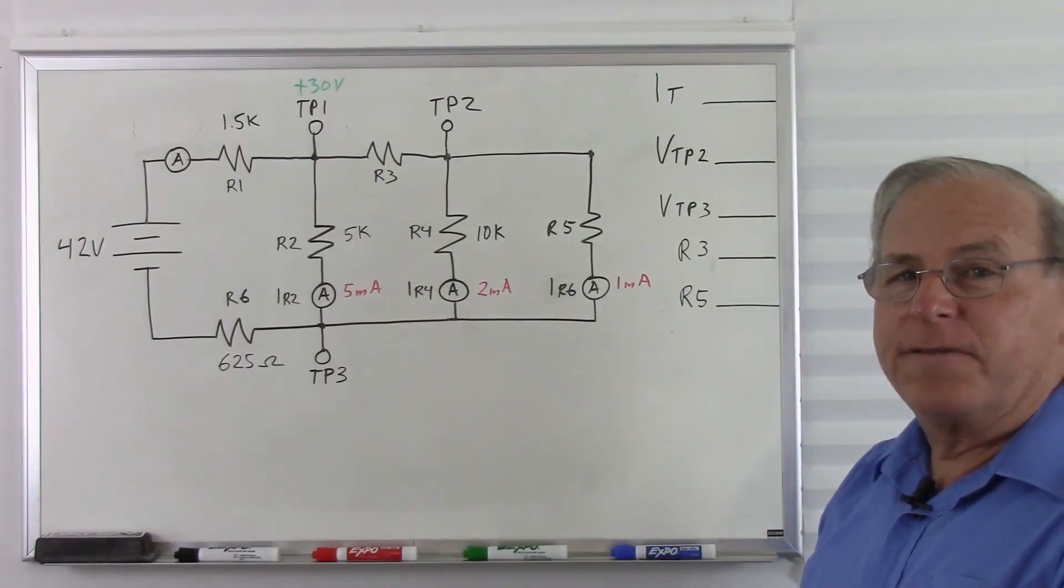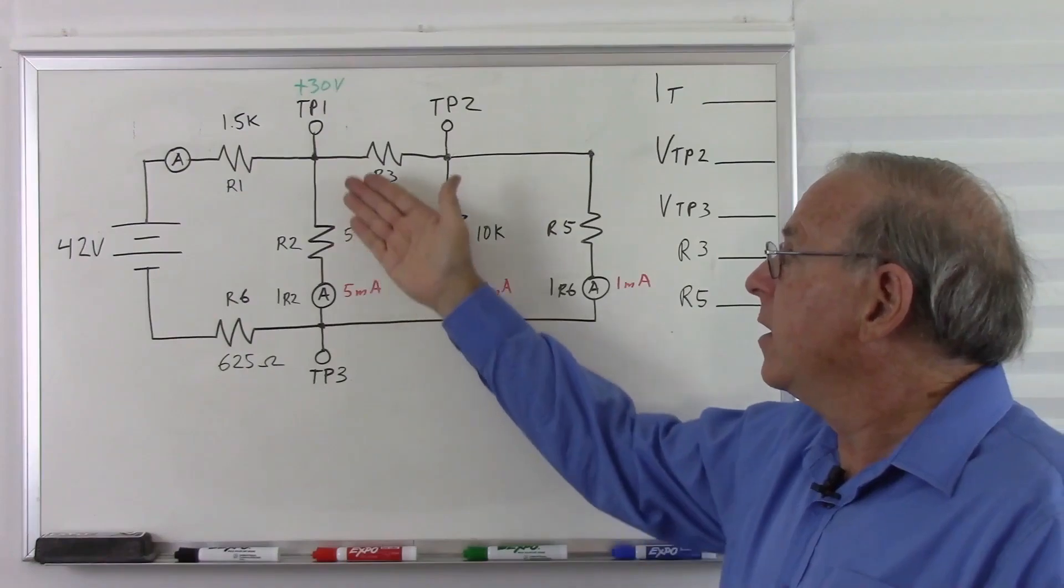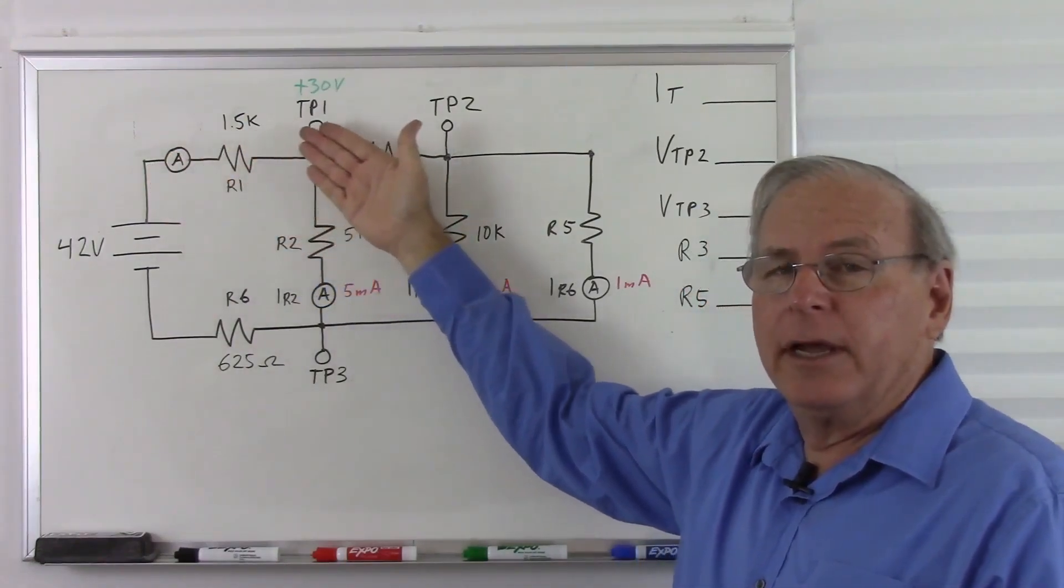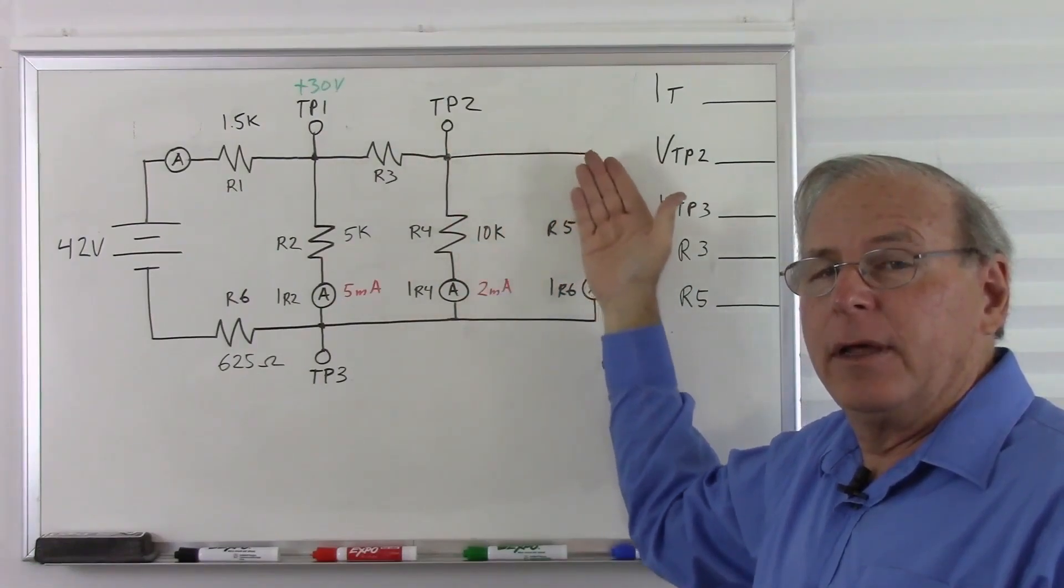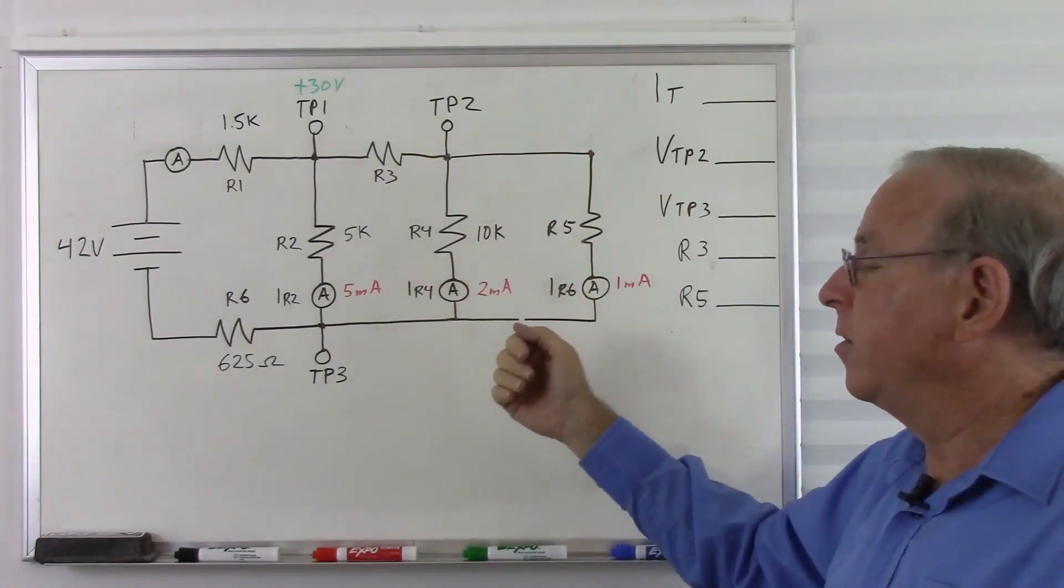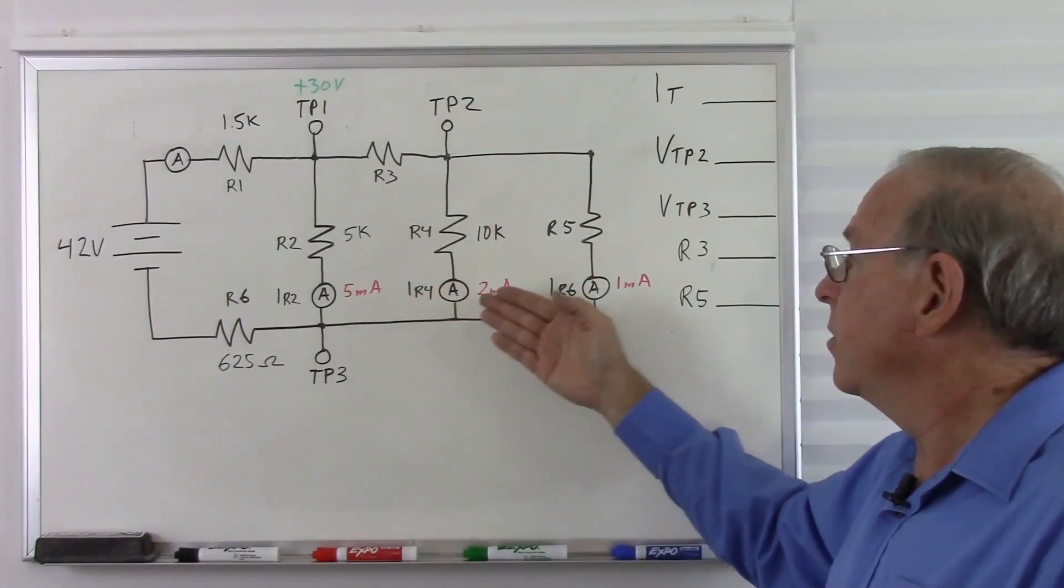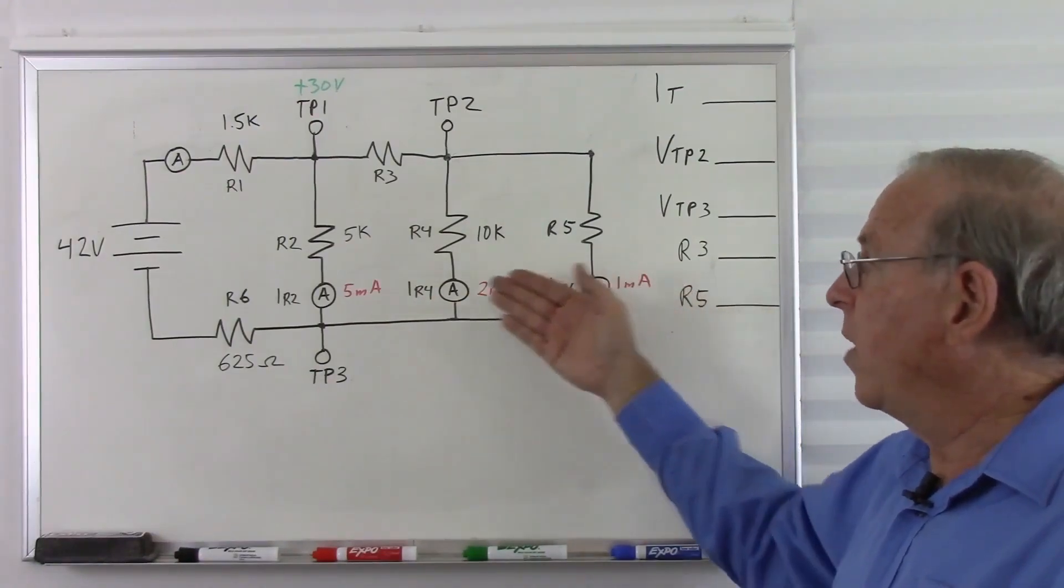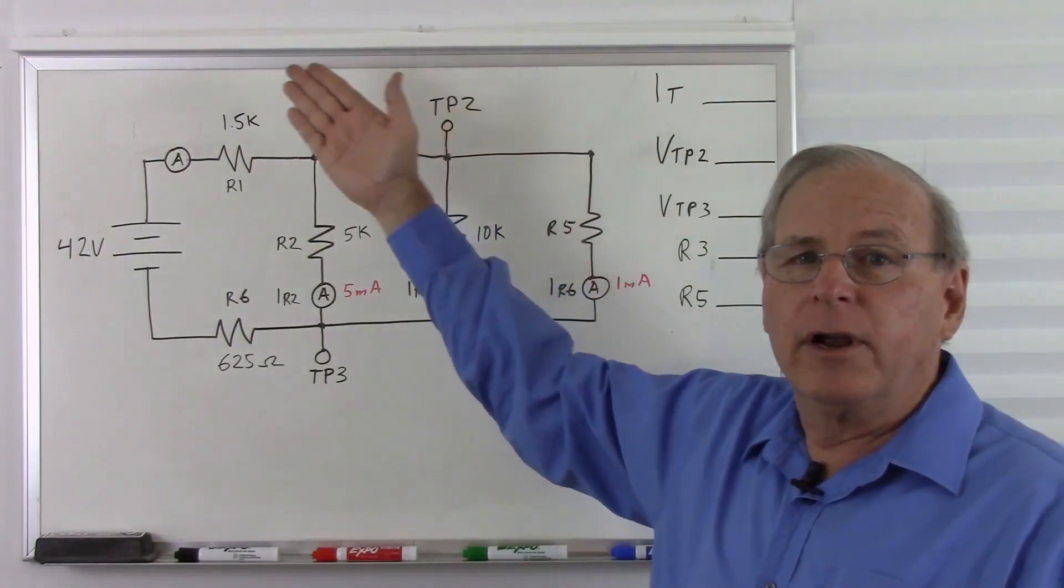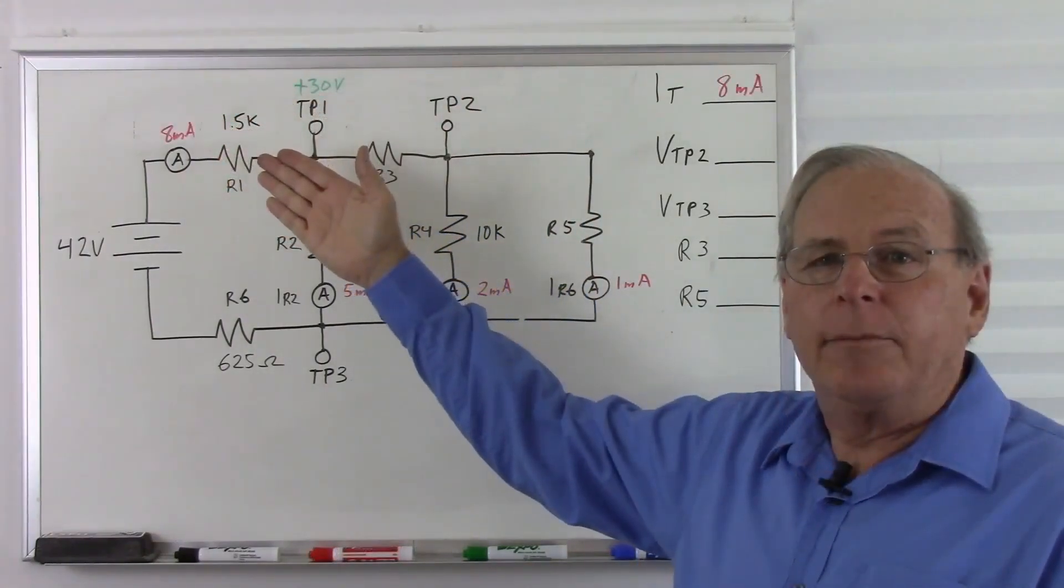What's the easiest thing to find out here? Well, we have our total current coming in, and it splits off one, two, three ways. So we see we have 5 milliamps, 2 milliamps, and 1 milliamp. So we add those together, our total current has to be 8 milliamps.